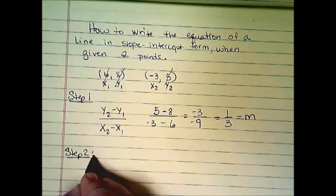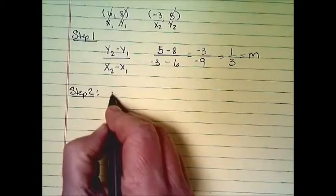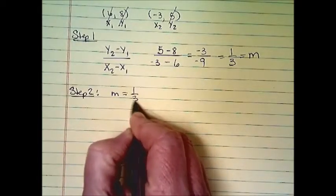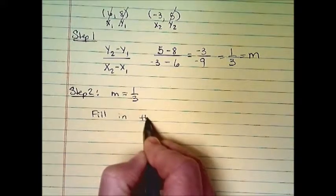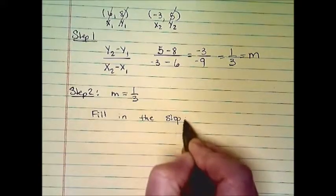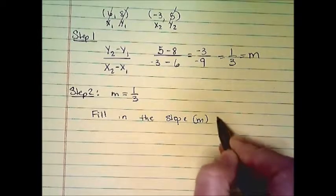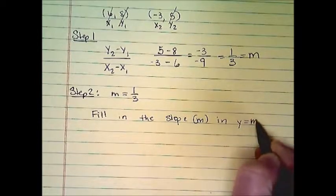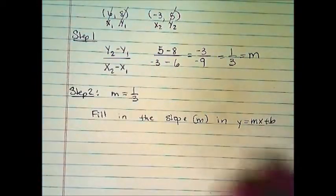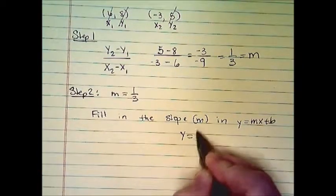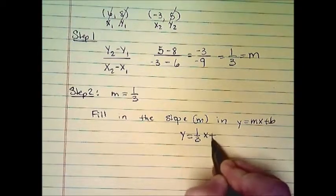Step two. Identify m. It's 1 third. Fill in the slope m in y equals mx plus b. That's card number two. So y equals 1 third x plus b.